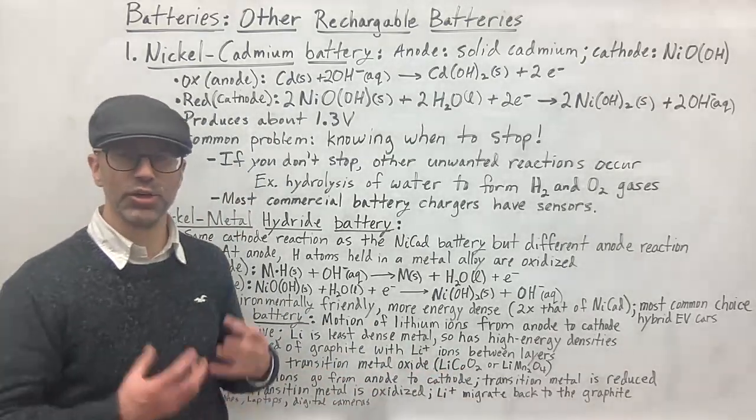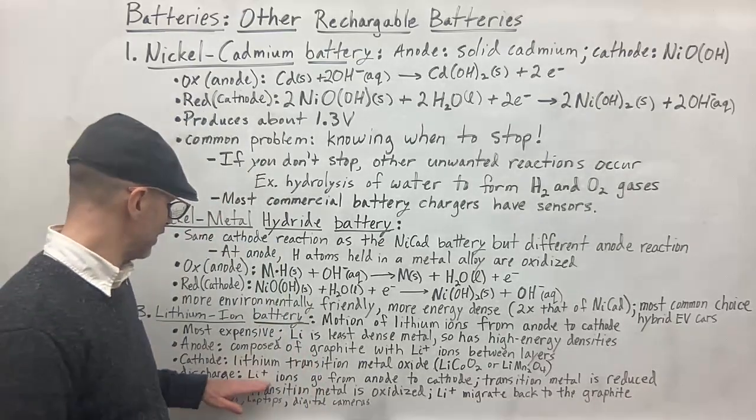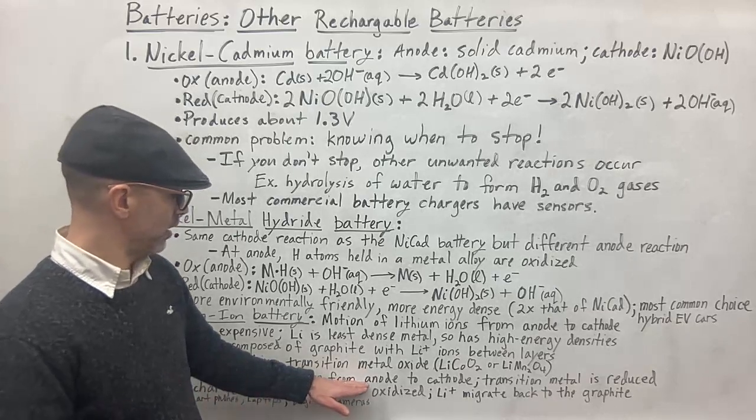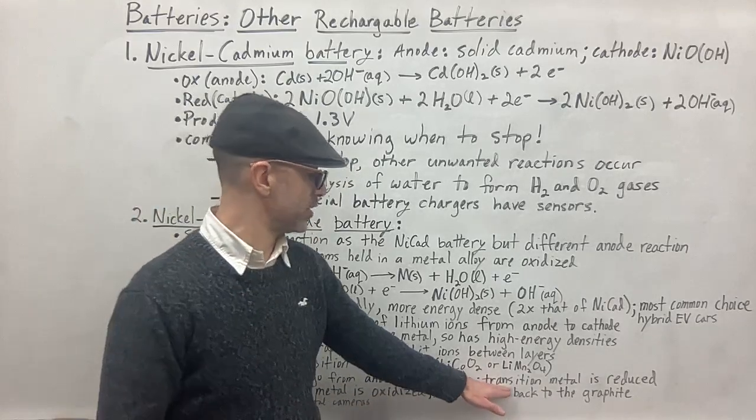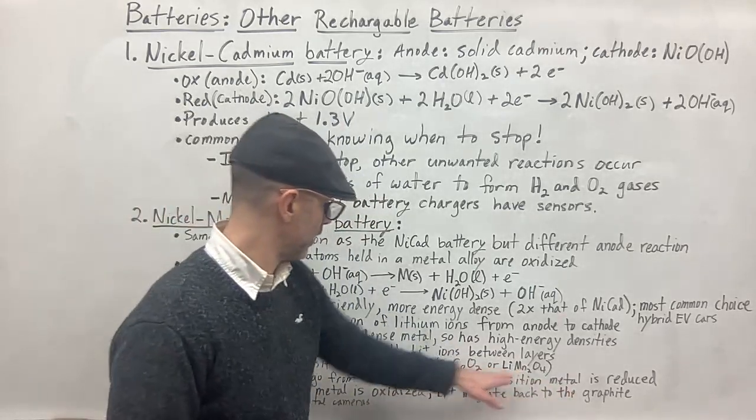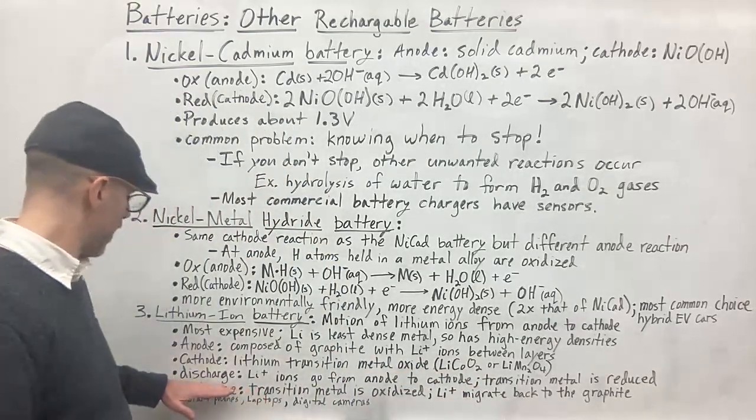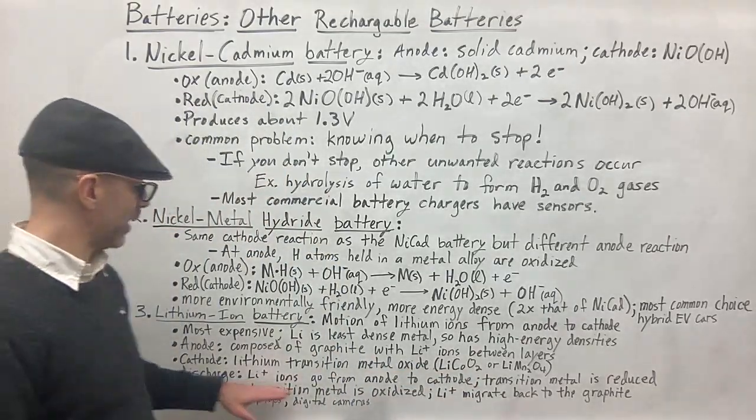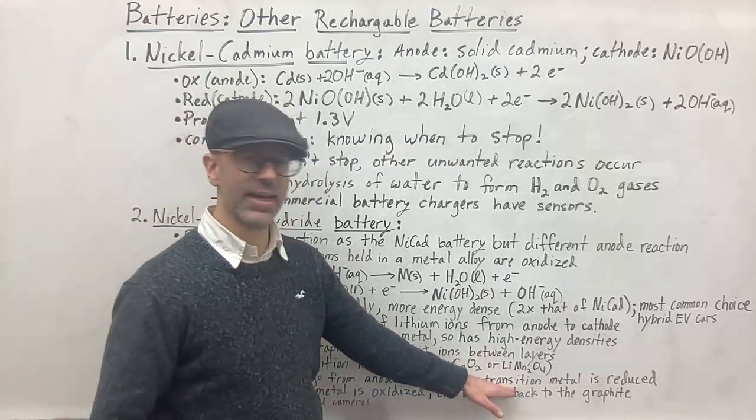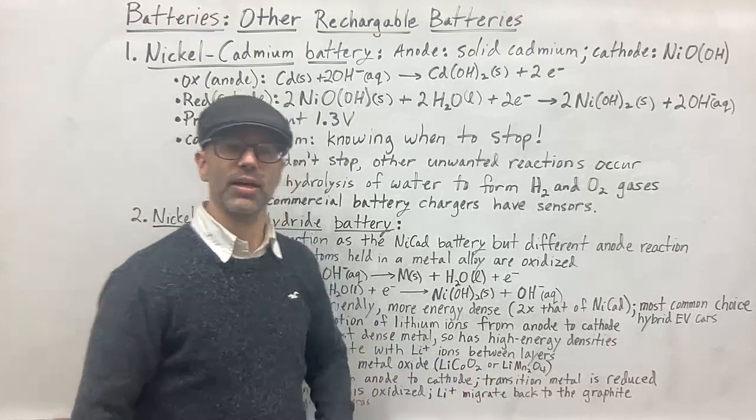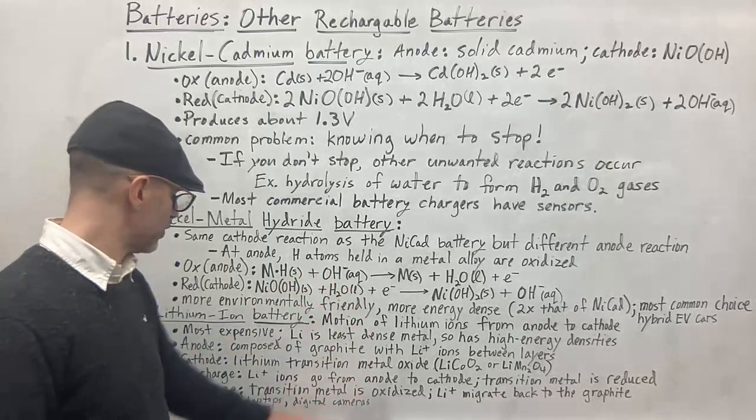So those would be your cathode. And so when you discharge the battery, when you're using the battery or discharging it to do something, then the lithium ions go from the anode to the cathode. And so in that process, the transition metal is reduced. So either the manganese here or the cobalt here is going to be reduced. Now, when you recharge the battery, the lithium ions are going to go from the anode back to the cathode. And in that case, the transition metal is going to be reduced. And so that's how these batteries work.